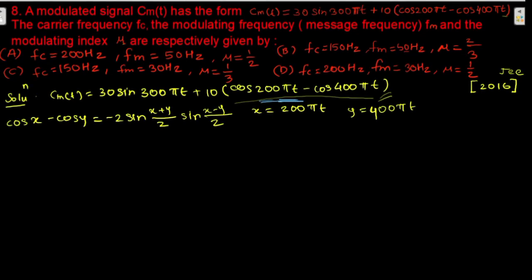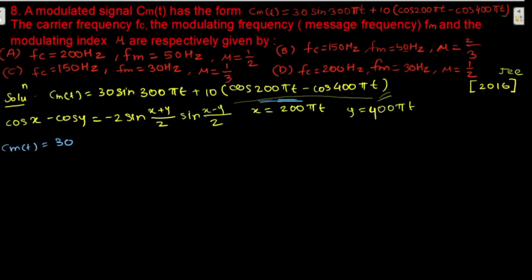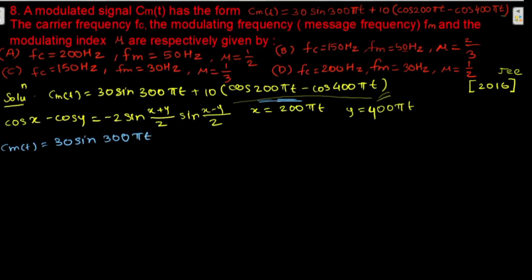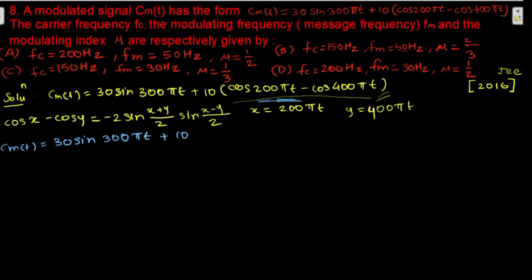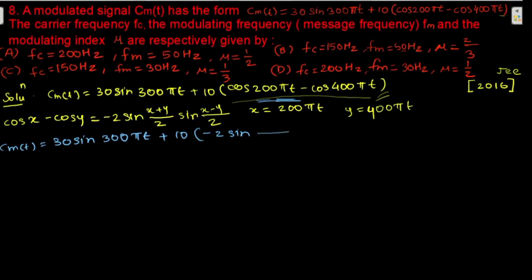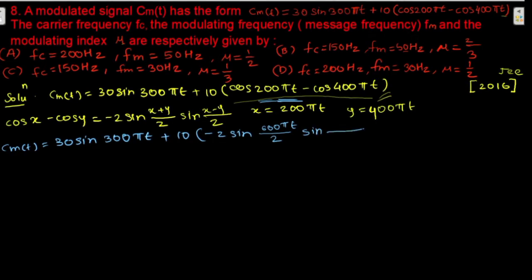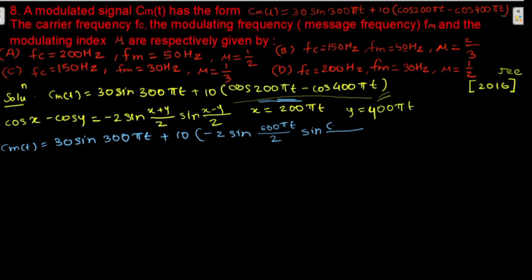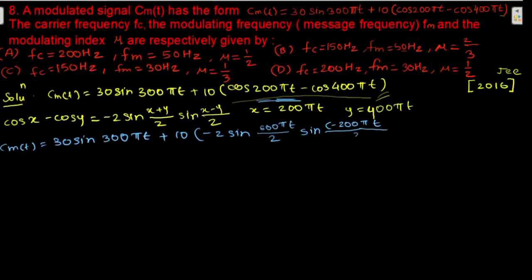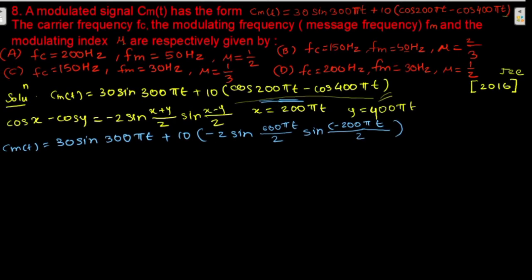Substituting, this expression can be written as: 30 sin(300πt) + 10 × [−2 sin((200πt + 400πt)/2) · sin((200πt − 400πt)/2)]. That gives us sin(600πt/2) = sin(300πt), and sin(−200πt/2) = sin(−100πt).